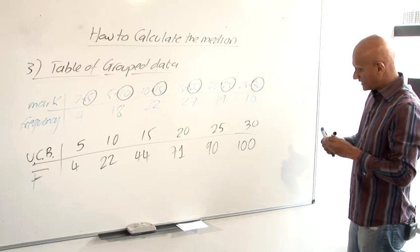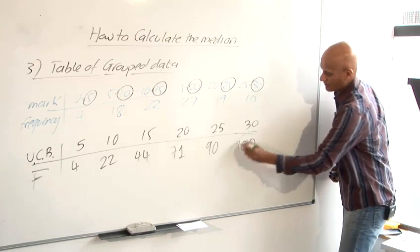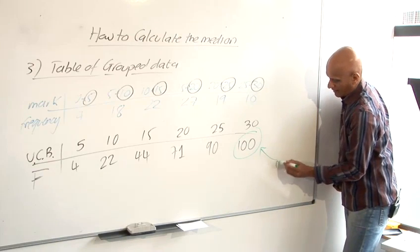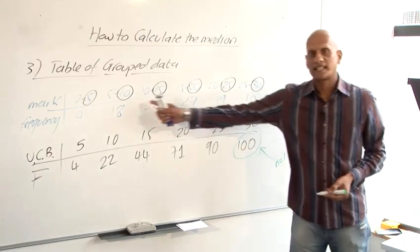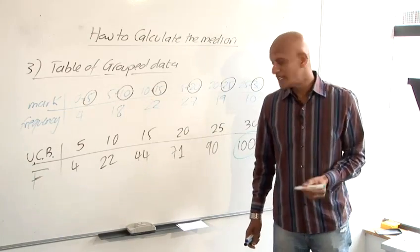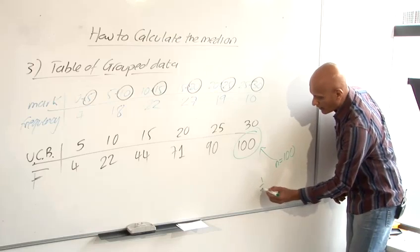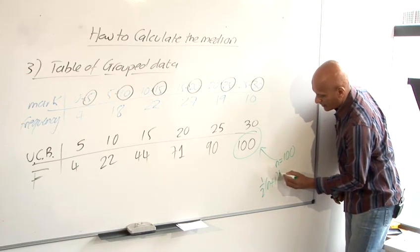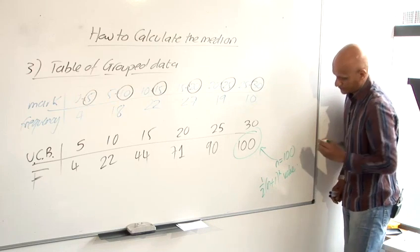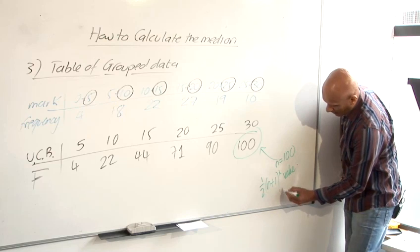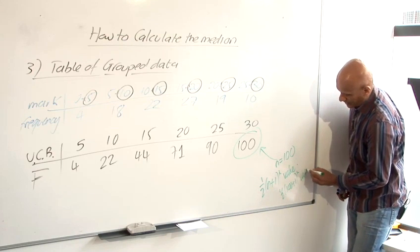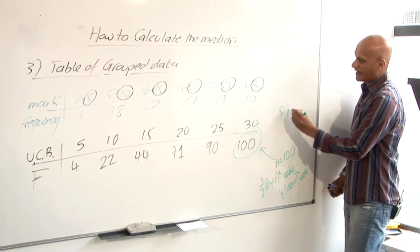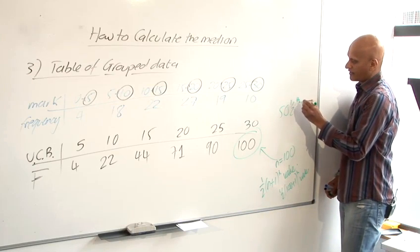So in this case, N is 100. That means there were 100 people all together in that data. And we want to find the median, still the half brackets N plus 1 value, which is going to be a half, 100 plus 1 value, which is going to be the 50 and a half value.